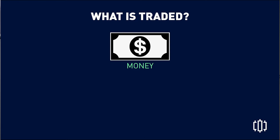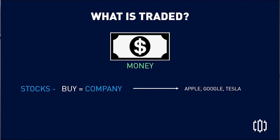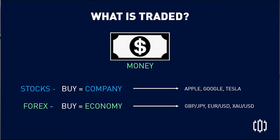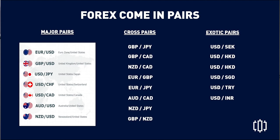Let me explain the difference between forex and stocks. With stocks, you buy a share of a company because you believe the share value will go up in the future — companies like Apple, Samsung, Google, Tesla, BPI, BDO. In forex, you buy a certain currency pair because you believe that economy will outperform another. Stocks are about companies; forex is about economies — GBP versus JPY, Euro versus USD, Gold versus USD. That's the big difference.